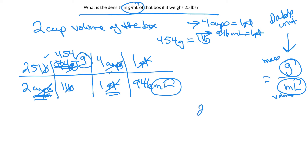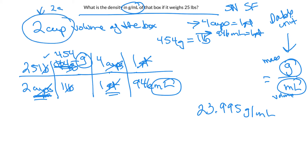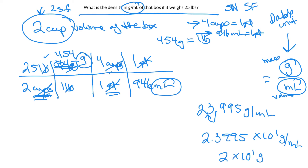Now I do the math — everything else is canceled out except the unit I want. So: 25 times 454 times 4, divided by 2, divided by 946, equals 23.995 grams per mL. My weakest link is two sig figs, so in scientific notation that's 2.3995 times 10 to the 1, which rounds to 2 times 10 to the 1 grams per mL.